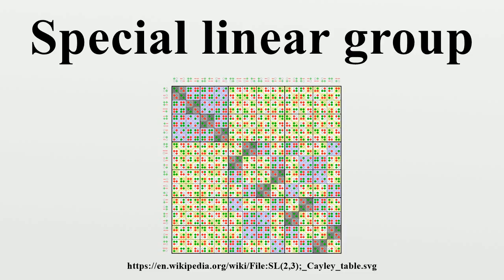Lie subgroup: When F is ℝ or ℂ, SL is a Lie subgroup of GL of dimension N²−1. The Lie algebra of SL consists of all N×N matrices over F with vanishing trace. The Lie bracket is given by the commutator.